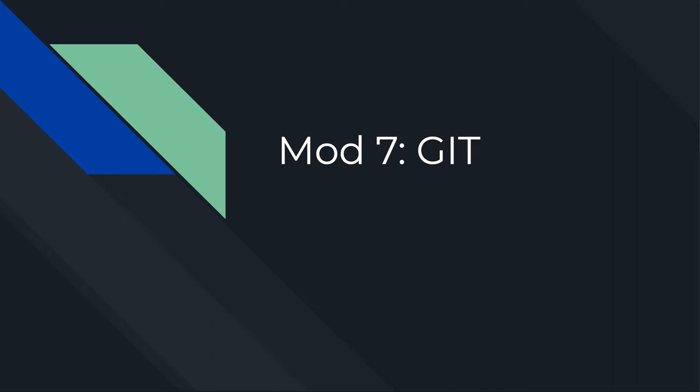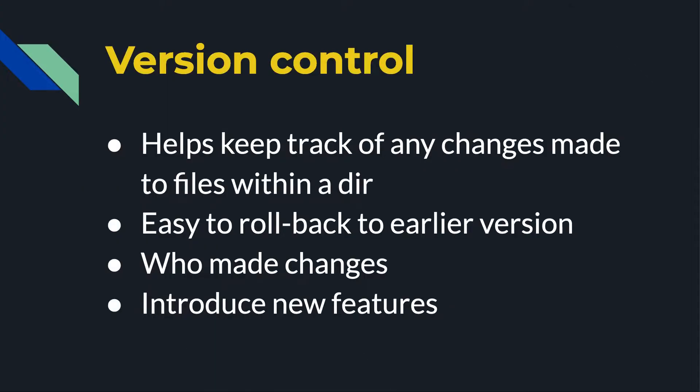We want to do a quick overview of Git, which is a version control system. Why do we care about it? Programmers definitely would want to care about version control — it allows them to track any changes that they've made in their code base.